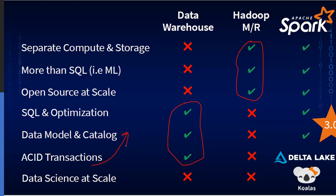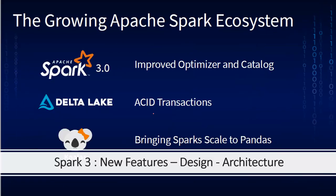With Spark 3, we are looking to fix the shortcomings of Hadoop MapReduce. Spark is heavily inspired by Hadoop MapReduce and had three strong features: separation of compute and storage, which was a path-breaking phenomenon. However, optimizations, data model catalog, and ACID properties were missing in Hadoop MapReduce and current Spark versions. That is what we're going to cater to as new features in Spark 3. The top three features are: improved optimizers and catalogs, ACID properties, and better support for data scientists.